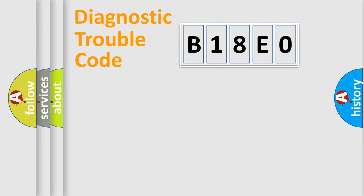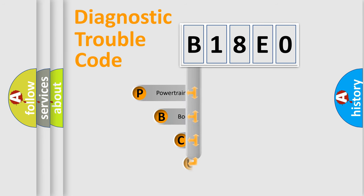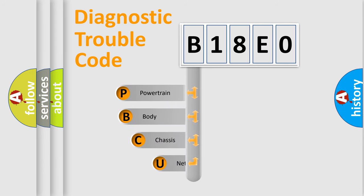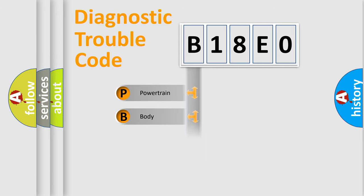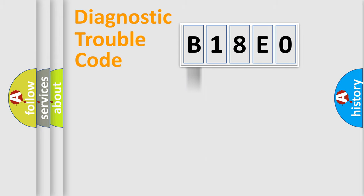Let's do this. First, let's look at the history of diagnostic fault code composition according to the OBD2 protocol, which is unified for all automakers since 2000. We divide the electric system of an automobile into four basic units: Powertrain, Body, Chassis, and Network.